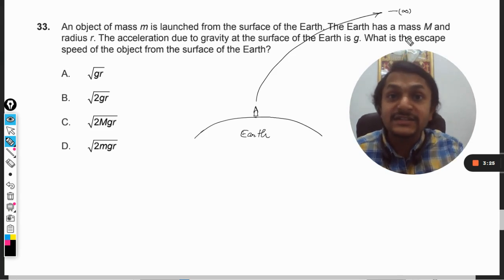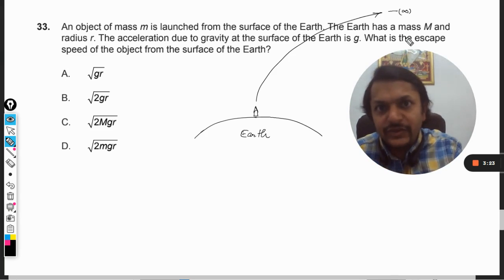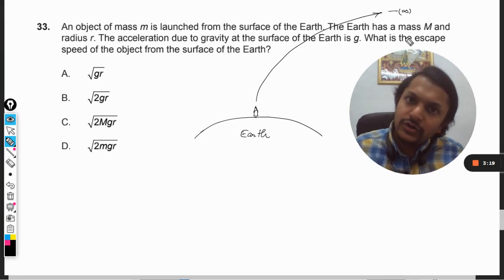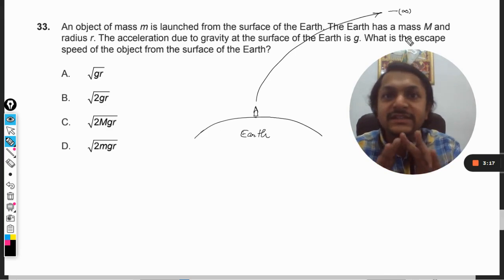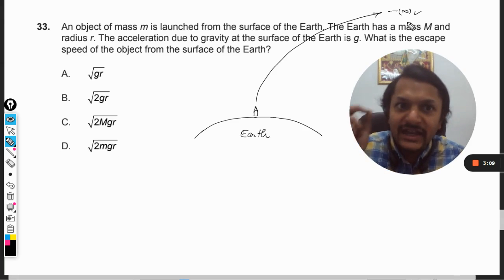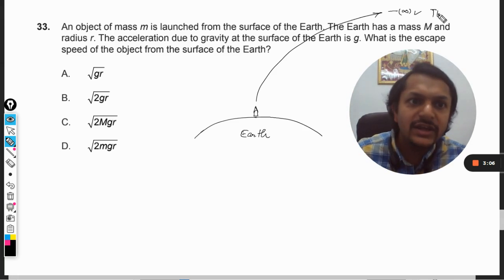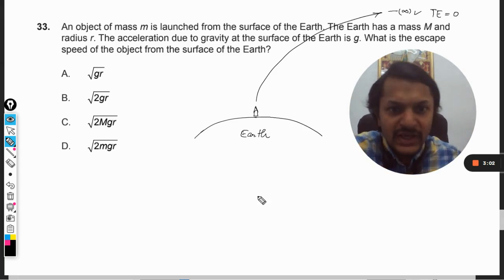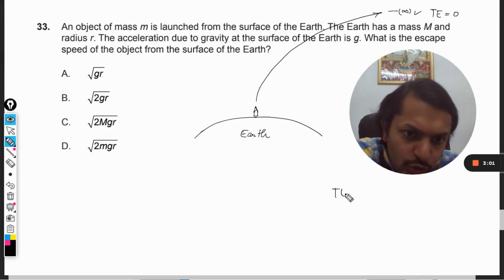Because what is escape speed? Escape speed is the speed that must be given to the object that is placed at the surface of the Earth. Once that velocity is given to the rocket or to that body, that body is never coming back, it is not going to return. It means it goes to infinite distance. And what do we mean by infinite distance?